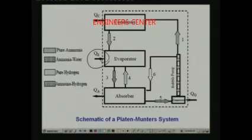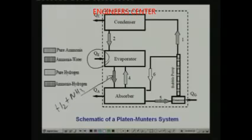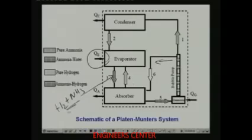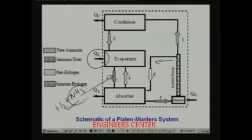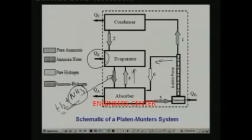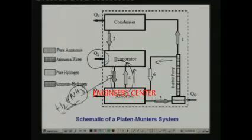As ammonia evaporates, a vapor is formed. The cooler mixture of hydrogen and ammonia vapor goes down due to buoyancy and flows to the absorber. In the absorber, the weak solution coming from the bubble pump contacts the hydrogen-ammonia mixture. The solution absorbs ammonia but cannot absorb hydrogen, so hydrogen is left out. As hydrogen absorbs heat, its temperature increases, it becomes lighter, and rises back up to the evaporator - maintaining closed hydrogen circulation by buoyancy.